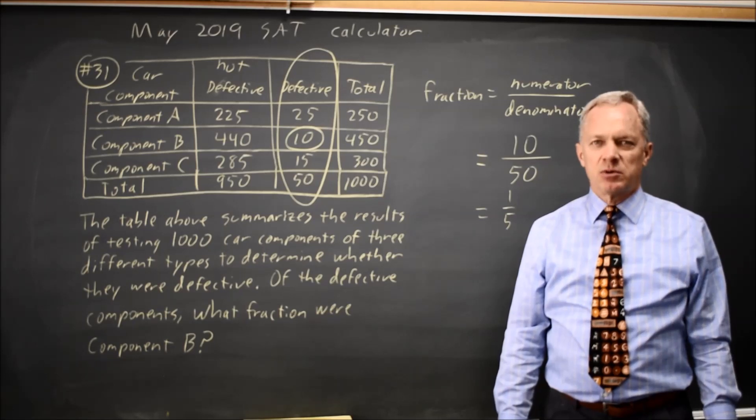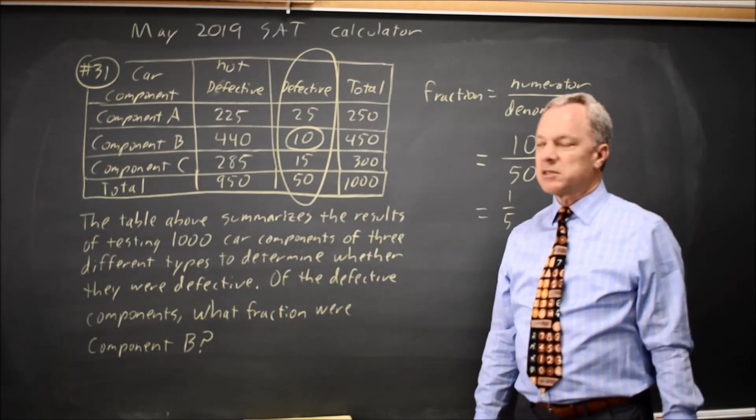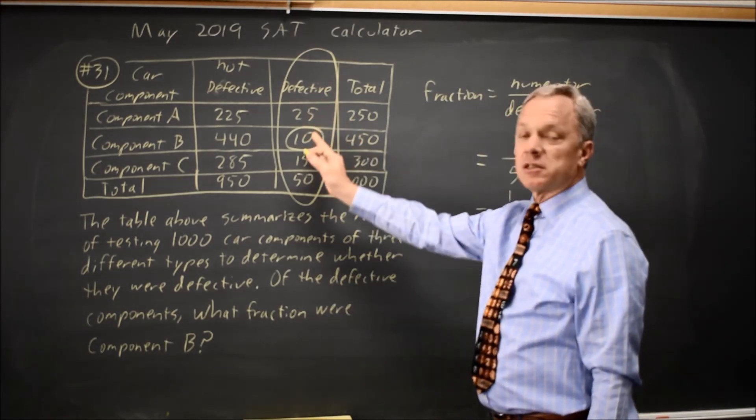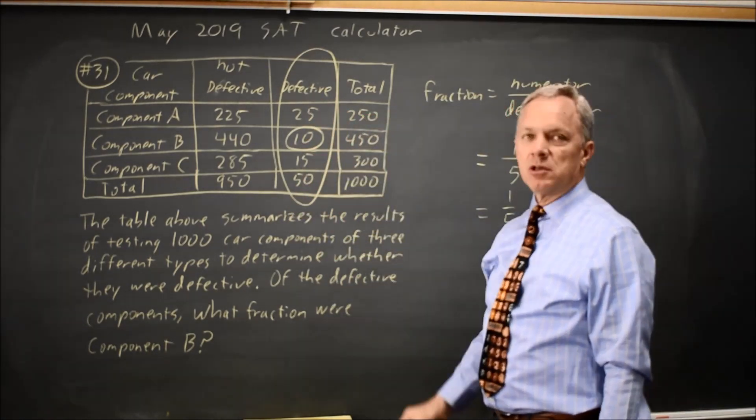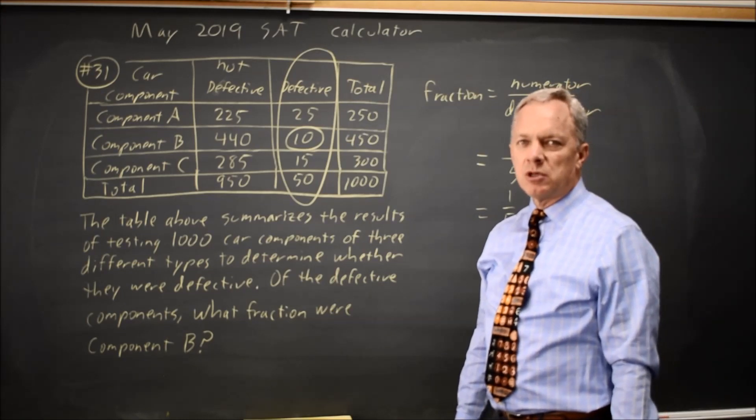College Board typically asks you one question about finding a probability from a table, and they might be looking at a single column as they are in this case, a single row, the entire table, or more than one column, or more than one row.